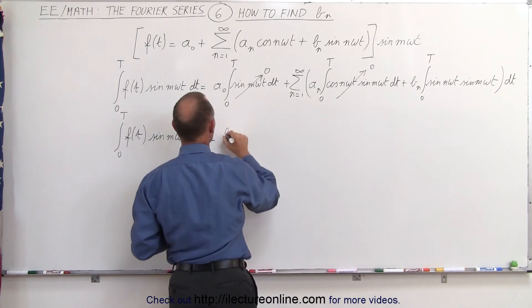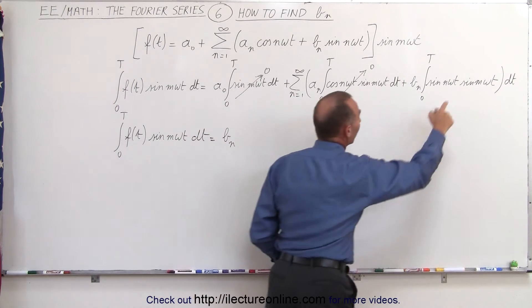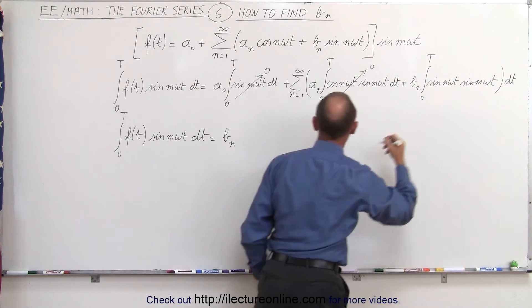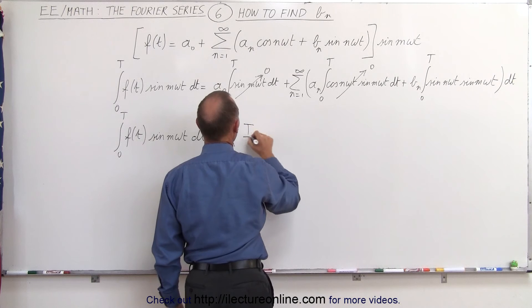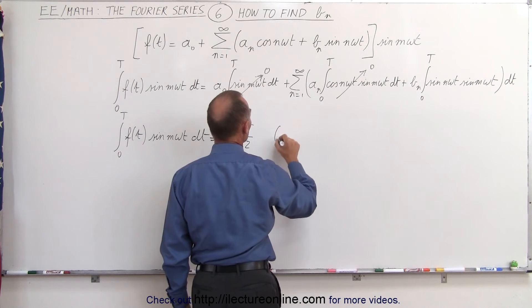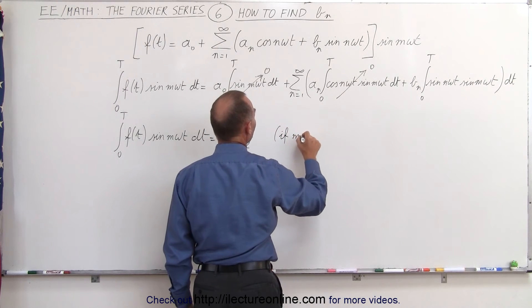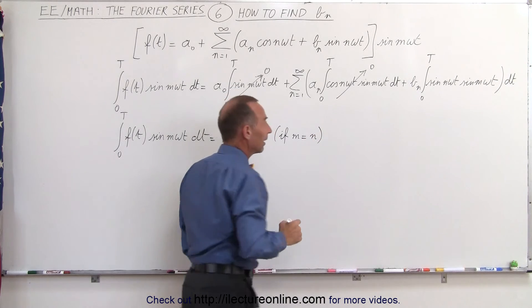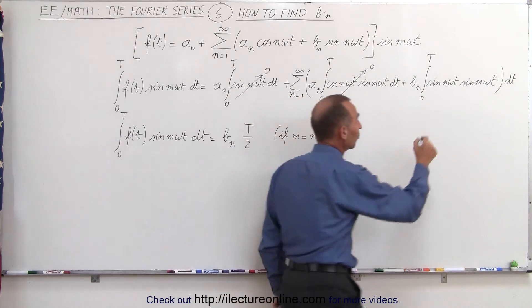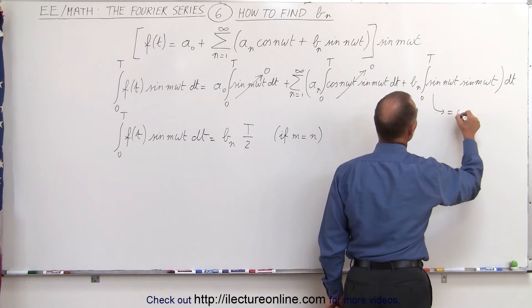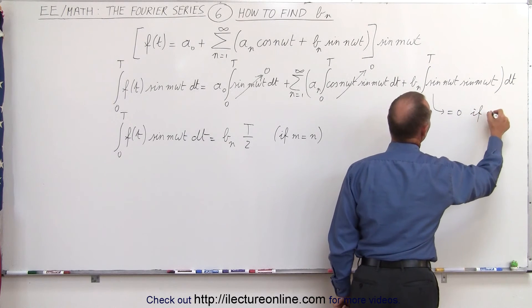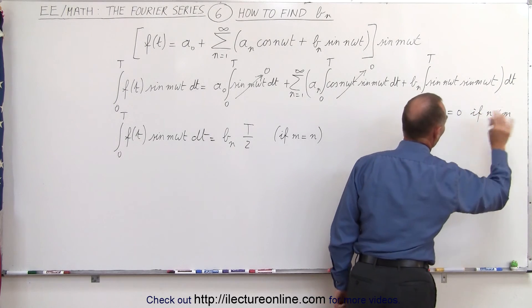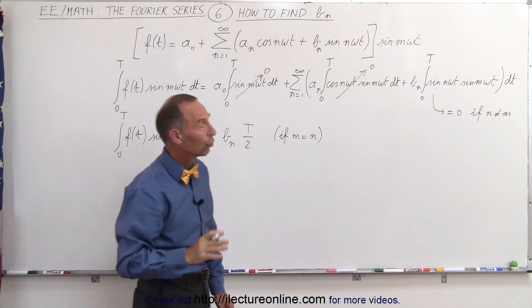and this is left, will equal to b sub n times the result of this integral, which happens to be T divided by 2. And that's only true if m equals n. If n doesn't equal m, this term right here will become equal to 0 if n is not equal to m. So for all of the combinations, that also will go to 0.